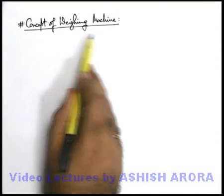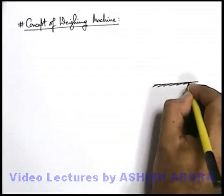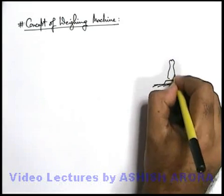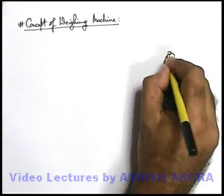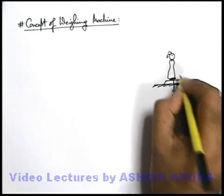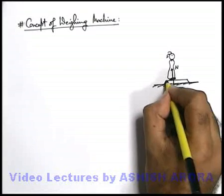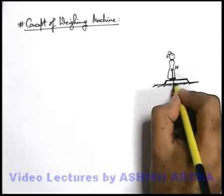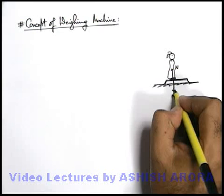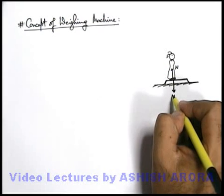Let us discuss the concept of a weighing machine. A weighing machine is a device used to measure weight. Many of you might have a weighing machine at home — when you stand on it, due to your weight you push the machine in the downward direction with a normal reaction, and the weighing machine reacts with the same force N. This machine is constructed so as to measure the force applied on it, and its needle deflects to give you the measurement of this normal reaction.